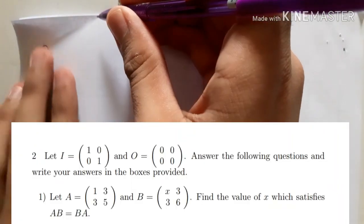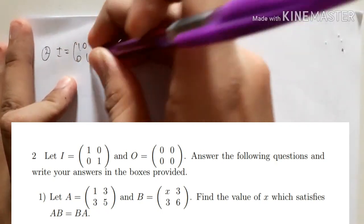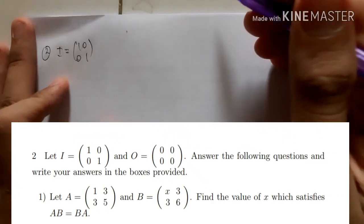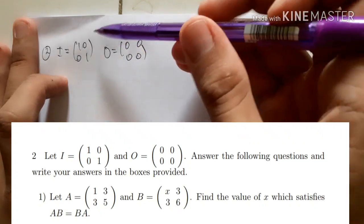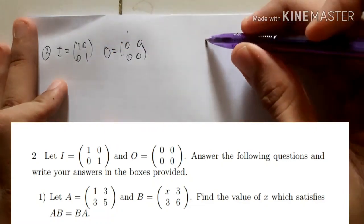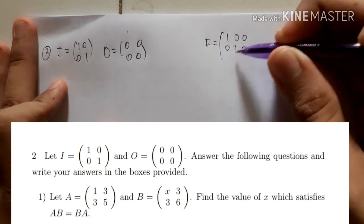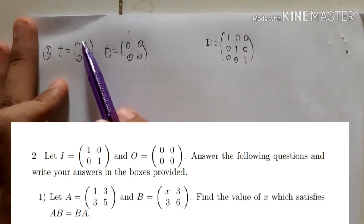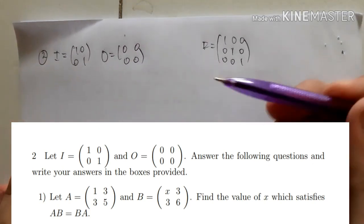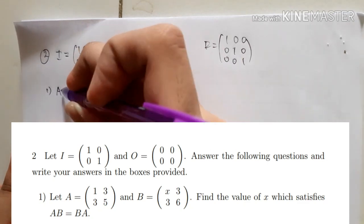Hello everyone, welcome to this cosine mathematics 2016 part 2 — a matrices question. It is known that I is the identity matrix [1,0;0,1]. The identity matrix has ones on the main diagonal. For example, a 3×3 identity matrix has ones on the main diagonal and zeros elsewhere. The zero matrix has all elements equal to zero.